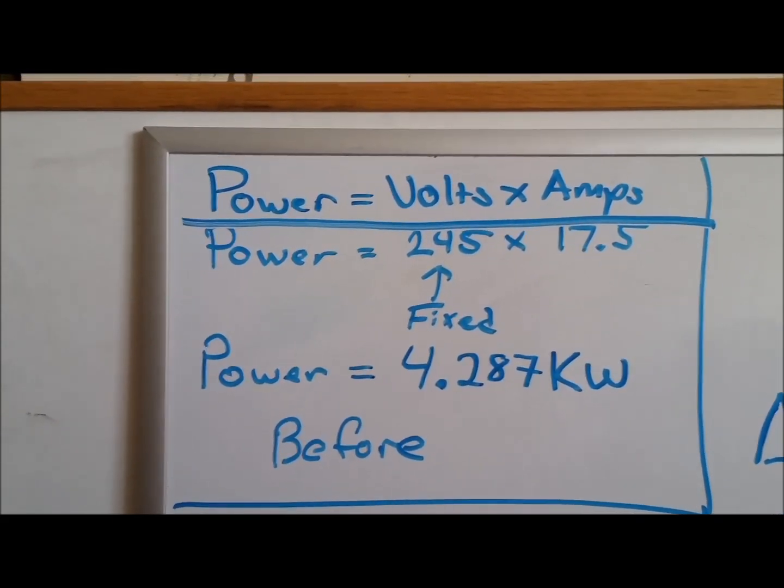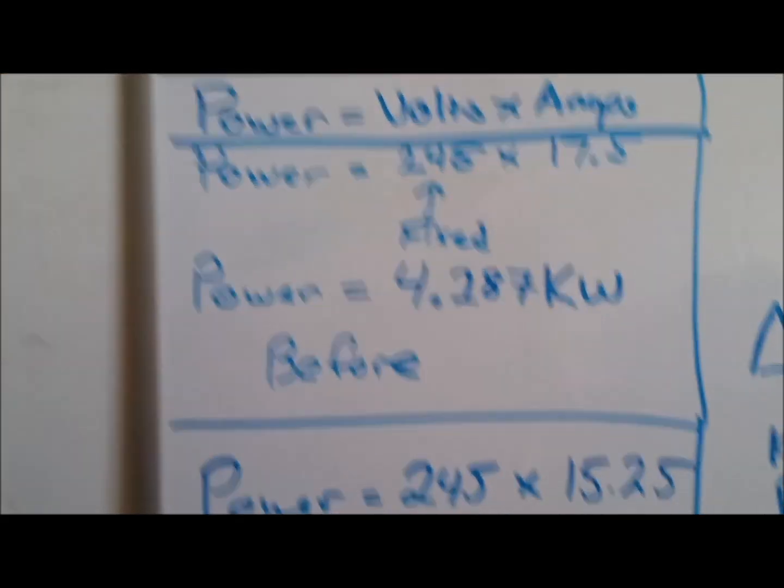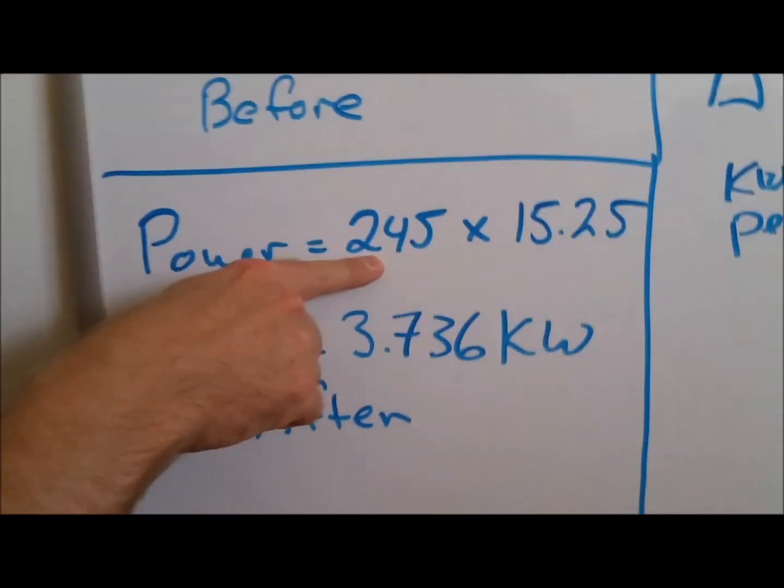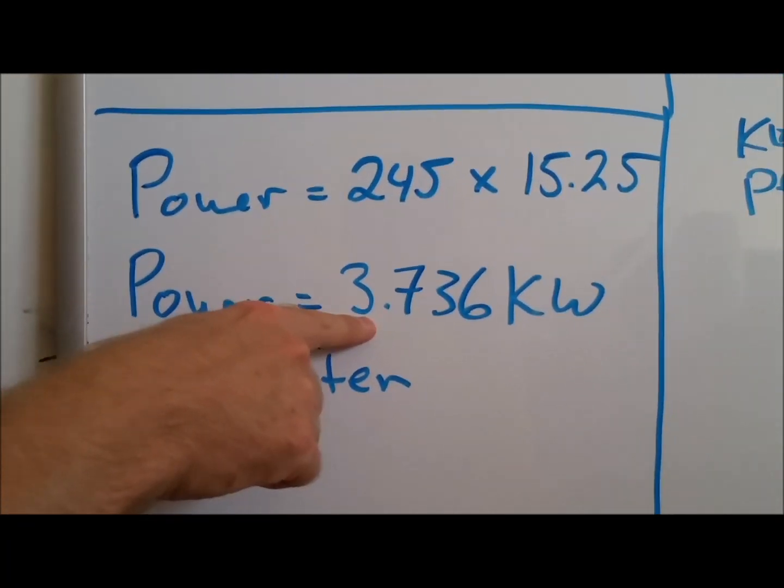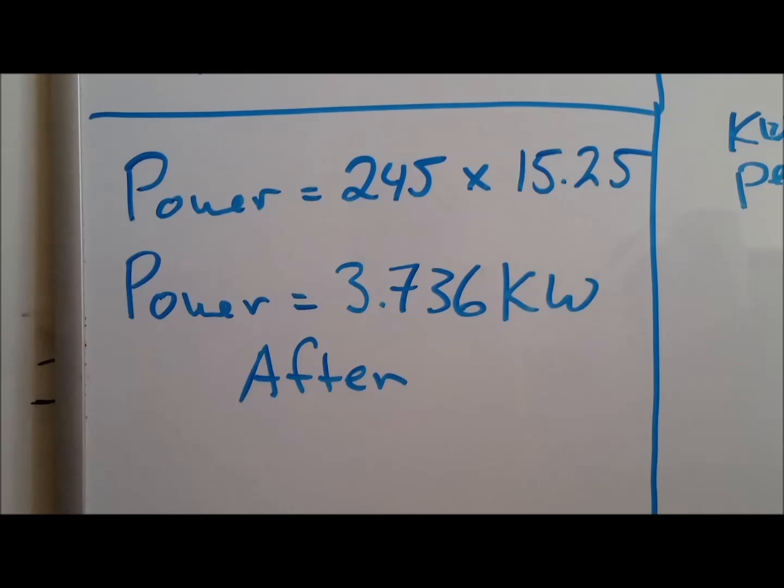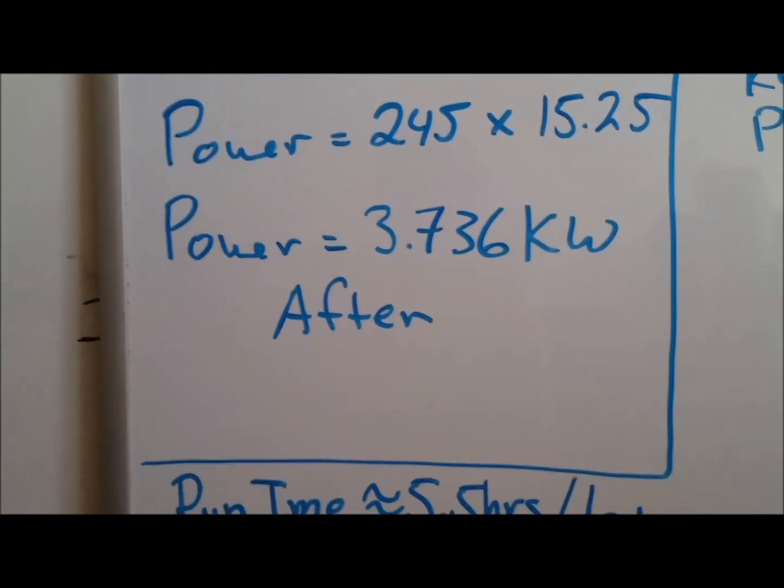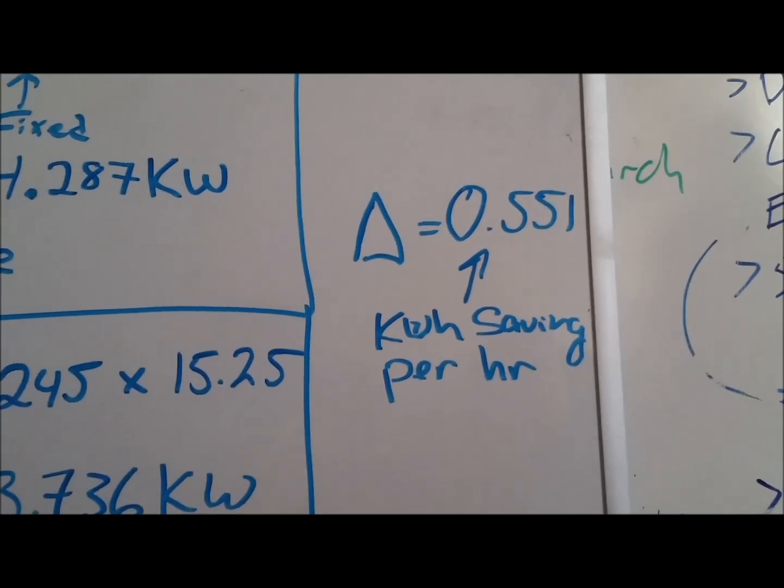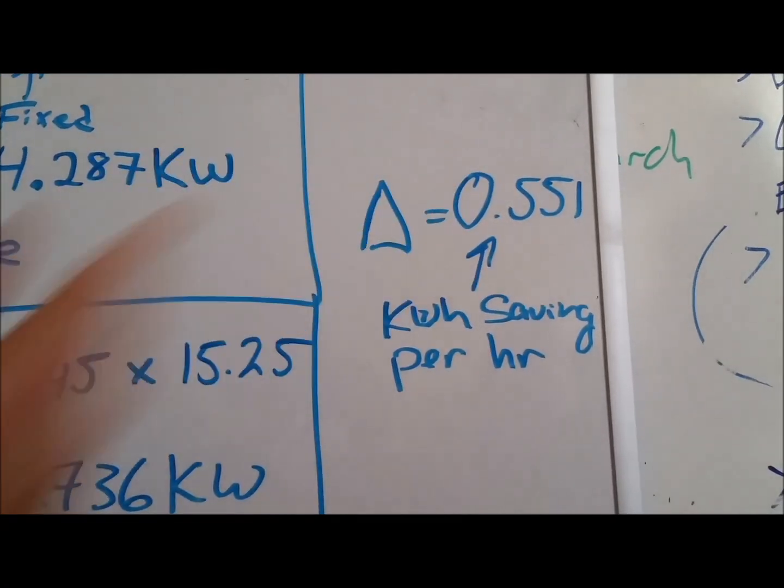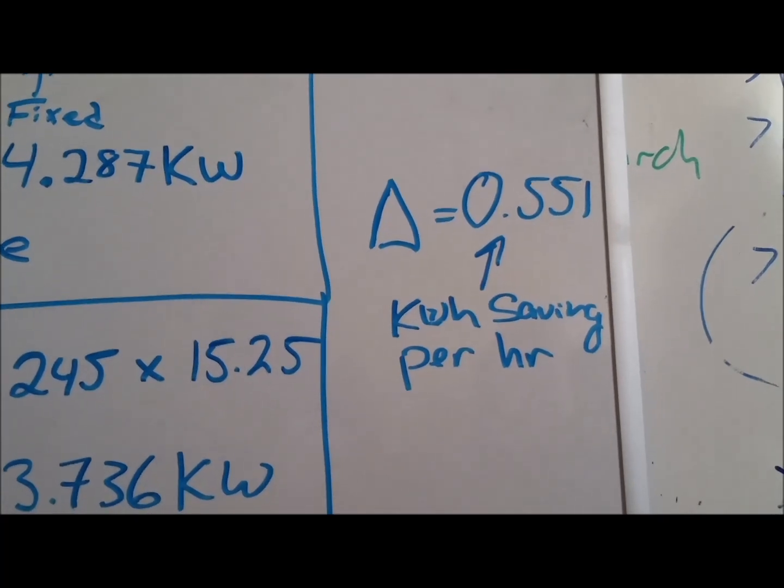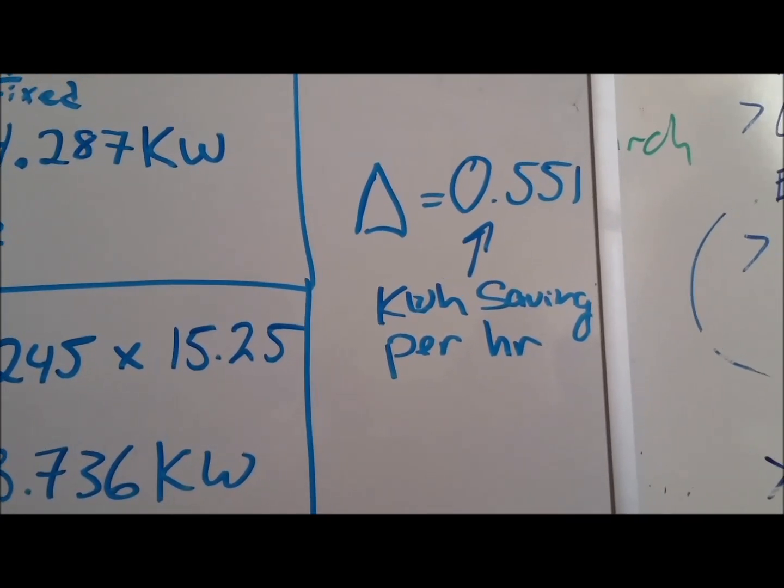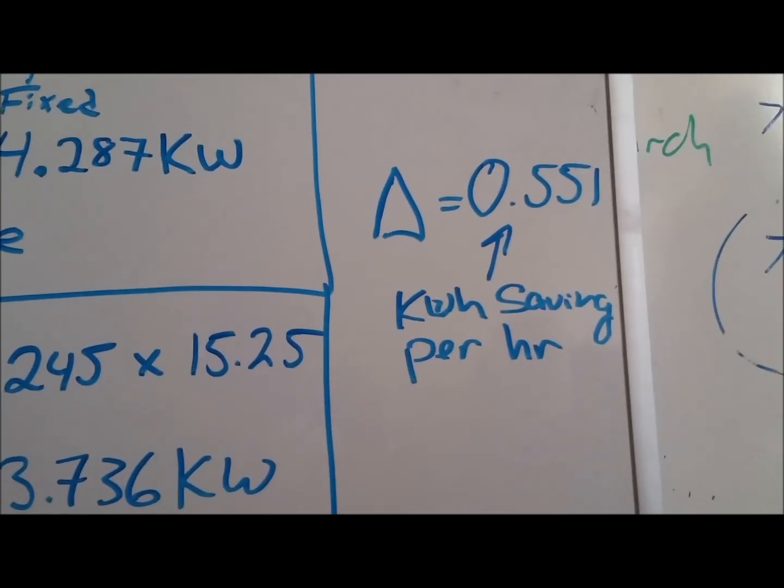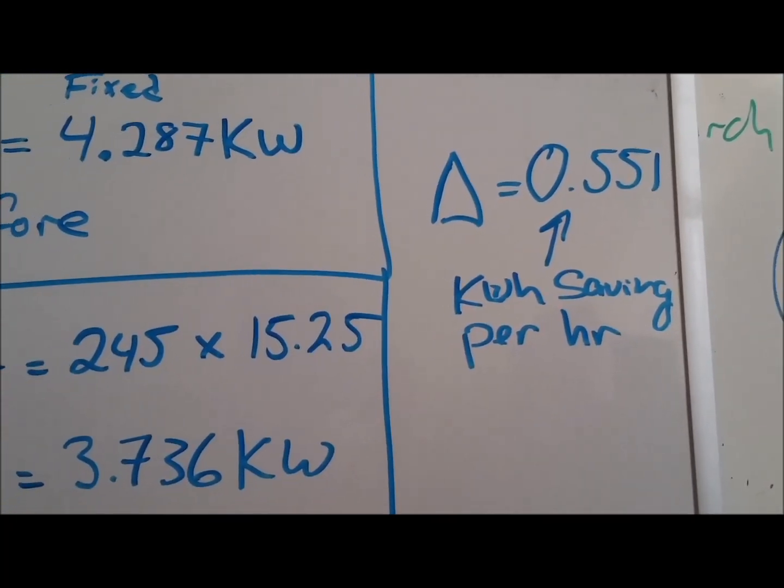Now if you run the same calculation again, 245 volts, 15.5 amps, your power calculation will now be roughly 3.7 kilowatt hours. And that's after the misters. So the difference between 4.287 and 3.736 is roughly 0.551 kilowatt hours per hour. So you essentially drop the power consumption by roughly 500 watts.